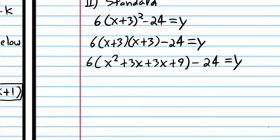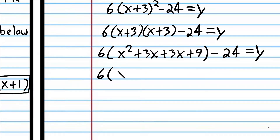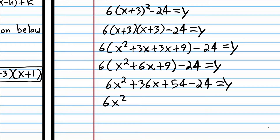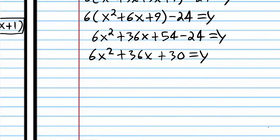We keep the parentheses because the 6 is still multiplied into all these terms. Before we multiply the 6, we'll go ahead and combine the like terms to make the expression simpler. Then we're going to use the distributive property to multiply the 6 into all terms: 6 times x squared is 6x squared, 6 times 6x is 36x, and 6 times 9 is 54. Then 54 minus 24 is 30, and that is standard form.